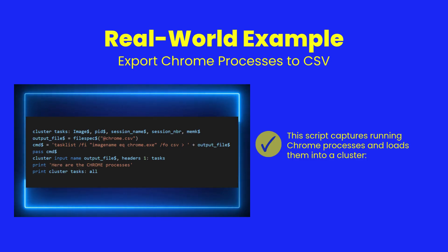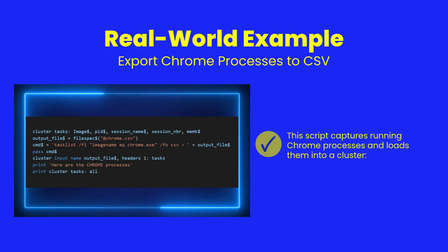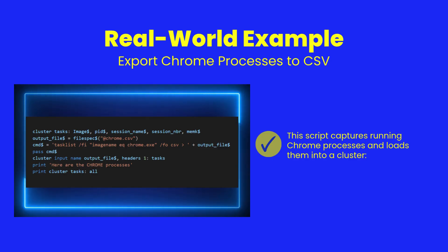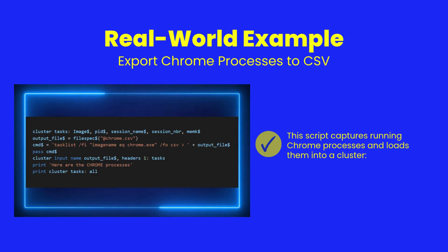This example uses pass to run the Windows tasklist command, filter for Chrome processes, and export the results to a CSV. SheerPower then loads that CSV into a cluster and prints the data. It shows how external OS utilities can plug right into your business logic.